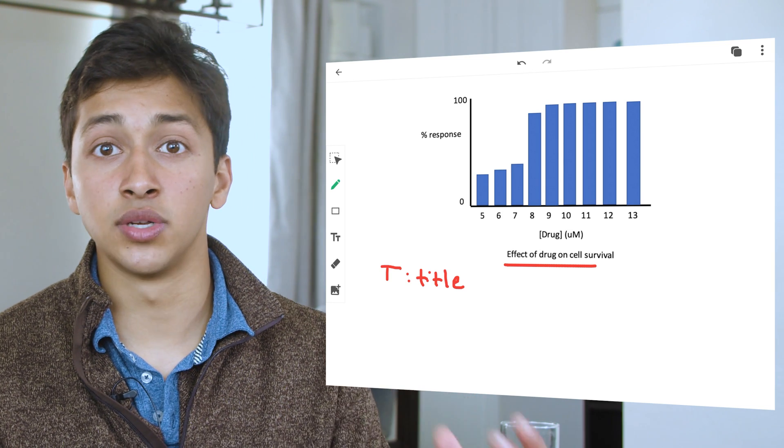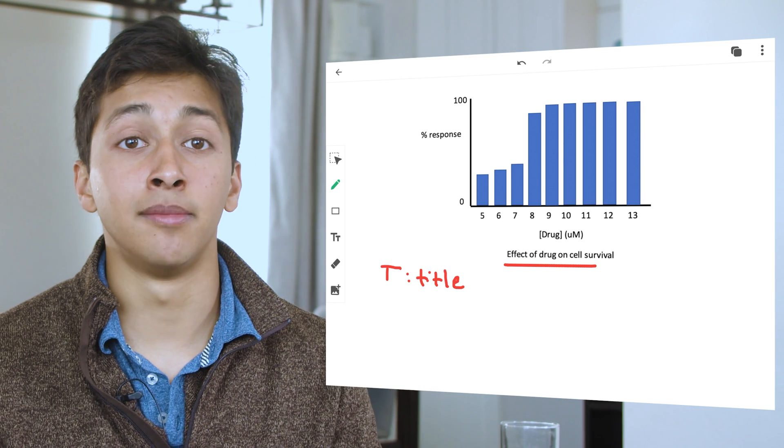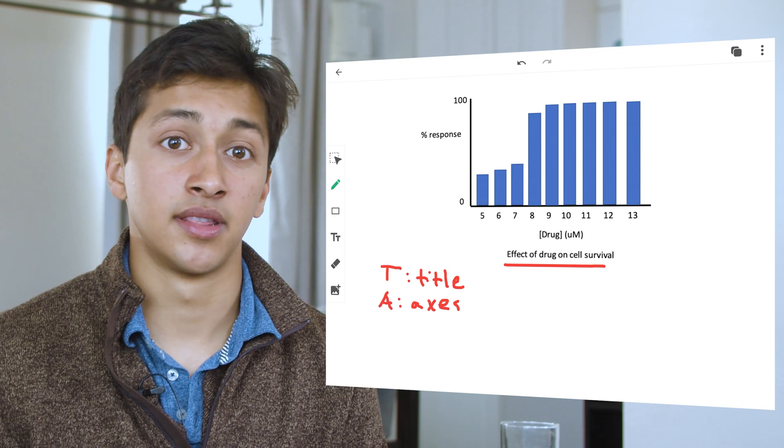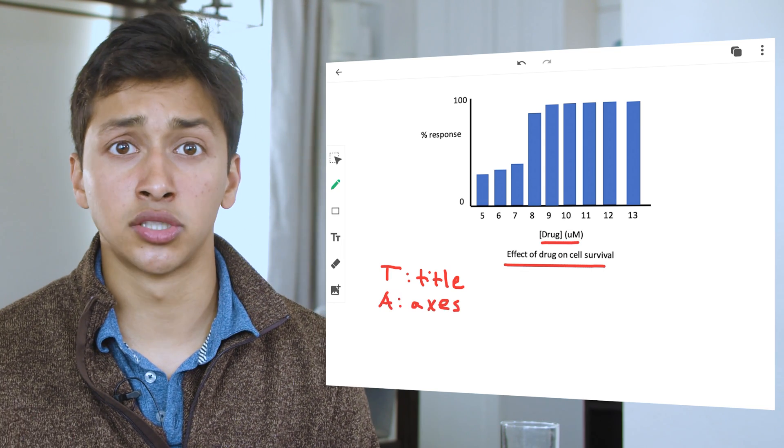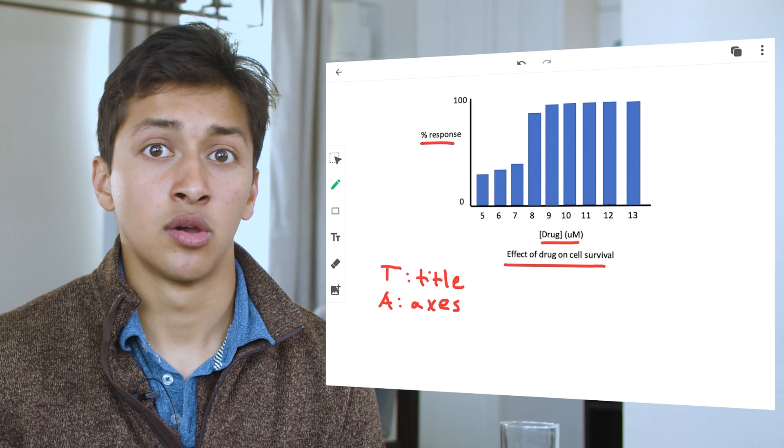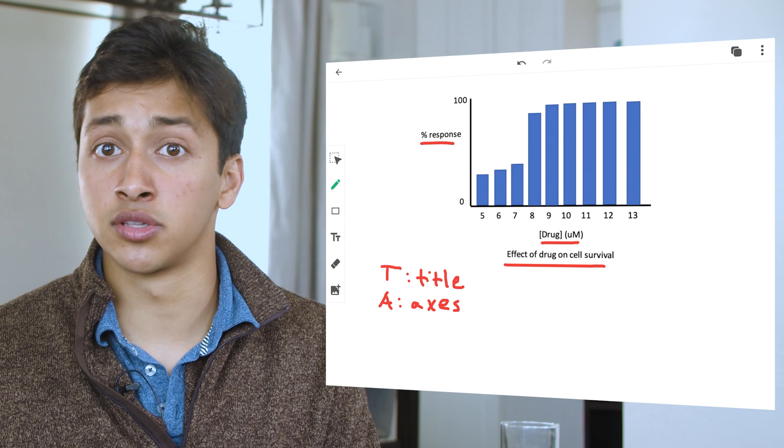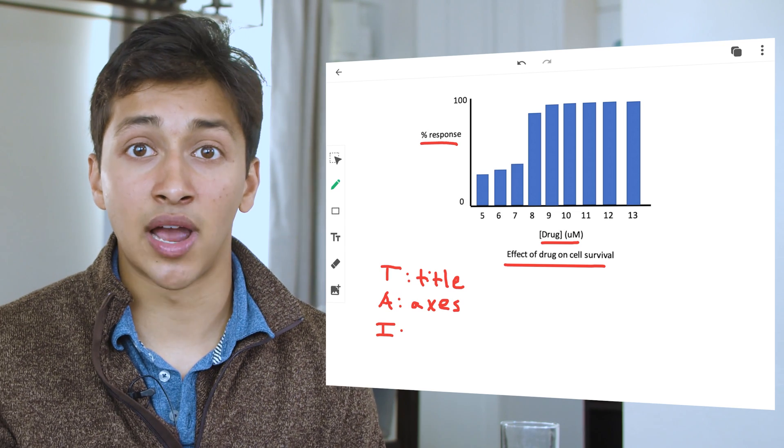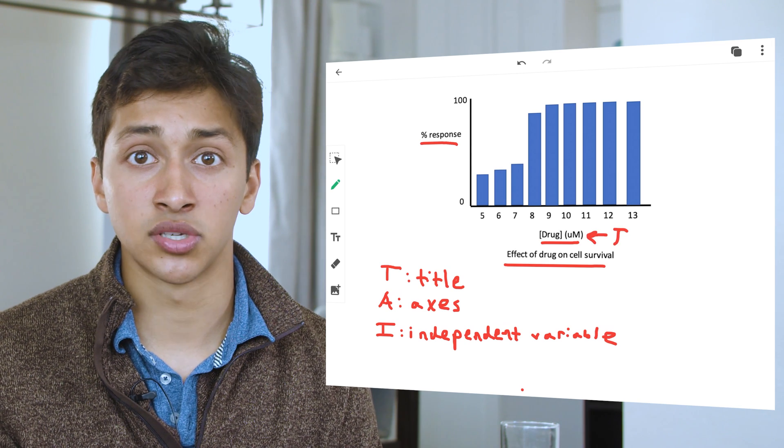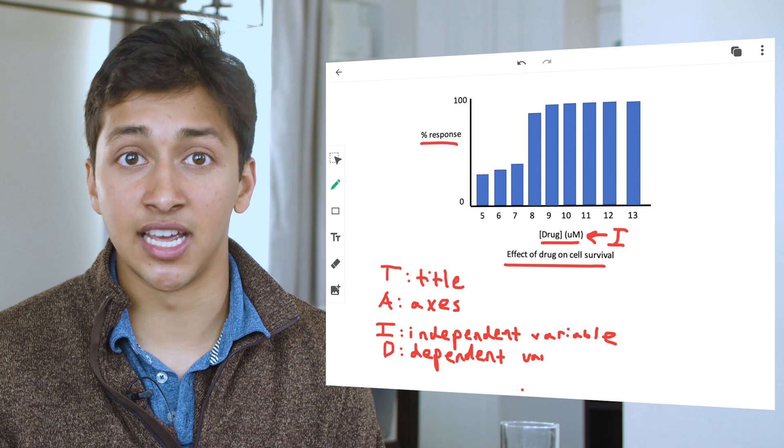Now let's look at the axes, or A. The x-axis shows increasing concentrations of drug in micromolar, while the y-axis measures the percentage response, which we know from the title has something to do with survival. When we look at the graphs, the axes make it easy to determine the independent and dependent variables, which are I and D in the TAIDP method.